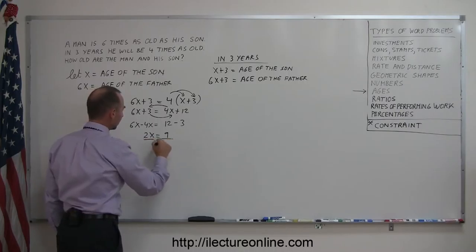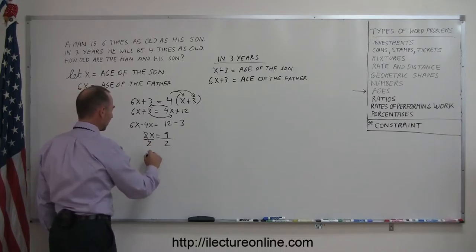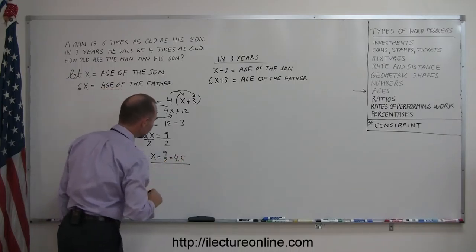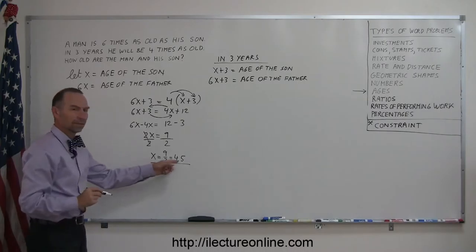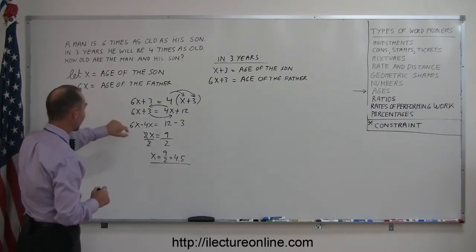And now we divide both sides of the equation by two. That cancels out. We have x equals nine over two, which is four point five. Okay? So how old is the son? The son is four and a half years old.